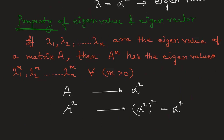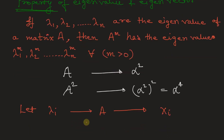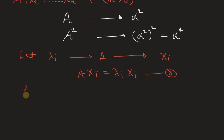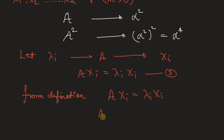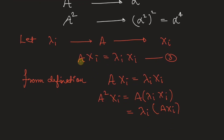Now let's see a short proof of this property. Let λᵢ be the eigenvalue of matrix A whose corresponding eigenvector is xᵢ, so we can write A·xᵢ = λᵢ·xᵢ as equation 3. Multiplying both sides by A, we get A²·xᵢ = A·(λᵢ·xᵢ). Since λᵢ is a constant, this becomes λᵢ·(A·xᵢ). Substituting A·xᵢ = λᵢ·xᵢ from equation 3, we get λᵢ·λᵢ·xᵢ.